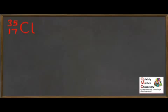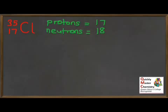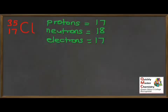Here's one for you to have a go at: how many protons, neutrons and electrons would be in the atom of chlorine shown here? Pause the video and see what you come up with. You should have said there are 17 protons, 18 neutrons, and 17 electrons. 17 protons because the atomic number is 17; 18 neutrons because the mass number minus the atomic number is 18; and 17 electrons because the number of electrons equals the number of protons.